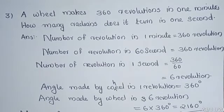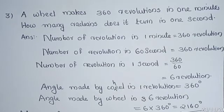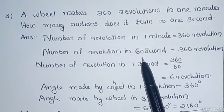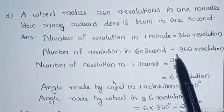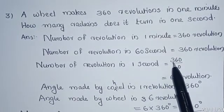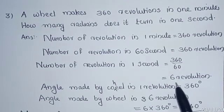Once again: a wheel makes 360 revolutions in 1 minute. How many radians does it turn in 1 second? The number of revolutions in 1 minute is 360. Since 1 minute equals 60 seconds, the number of revolutions in 1 second equals 360 divided by 60, which is 6 revolutions.